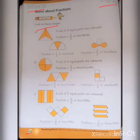Now the second shape - a half circle. It also has three parts, and one part is colored. So its fraction is 1/3 or one-third.